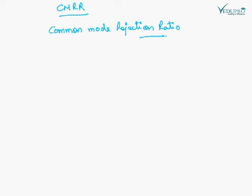CMRR is common mode rejection ratio. The gain of OPAMP is given by output upon input, where input is the difference between the two inputs VID which is V1 minus V2.